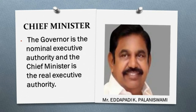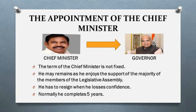Chief minister: the governor is the nominal executive authority and the chief minister is the real executive authority. The governor is the head of the state while the chief minister is the head of the government. The chief minister is appointed by the governor. His term is not fixed — he may remain as long as he enjoys the support of the majority of the members of the legislative assembly and must resign when he loses that majority.